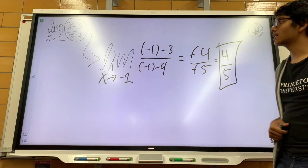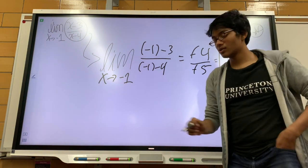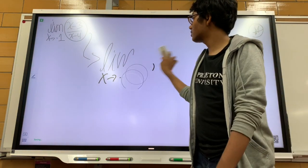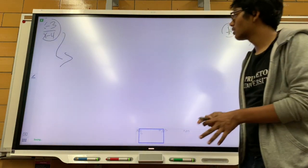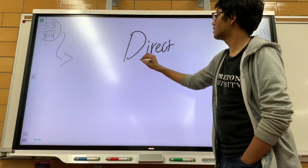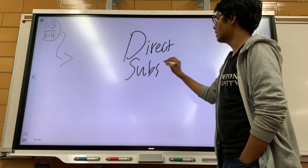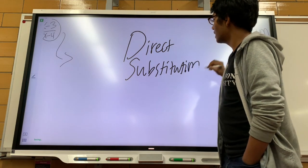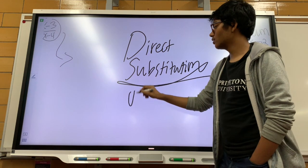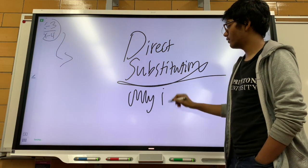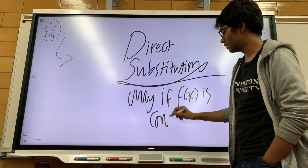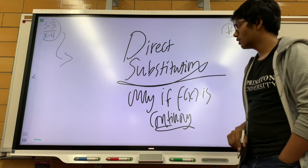And that's it, that's the limit of this function. So how did I solve this question? I used a technique called direct substitution. And that direct substitution only works if the function, as I stated right here, is continuous. So it only works if f of x is continuous.